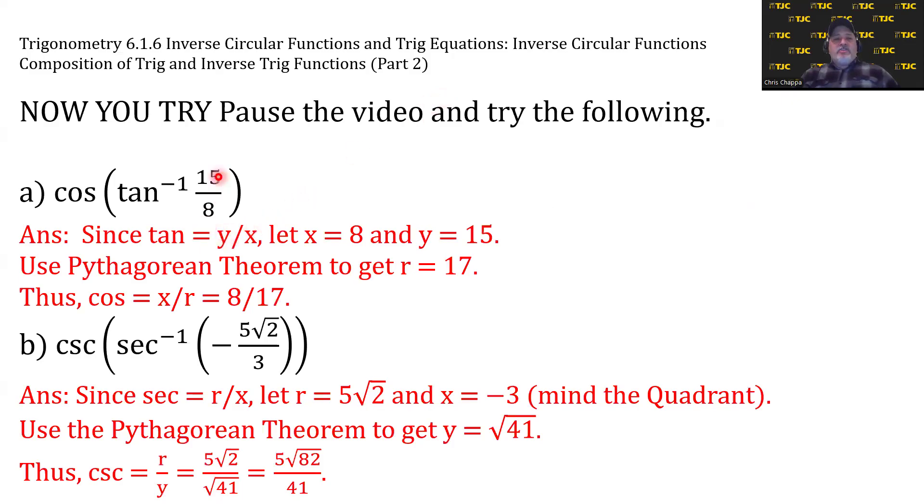For A, tangent is y over x, so 15 is y and 8 is x. Pythagorean theorem gets as r equals 17. Cosine is x over r, so it's 8 over 17.